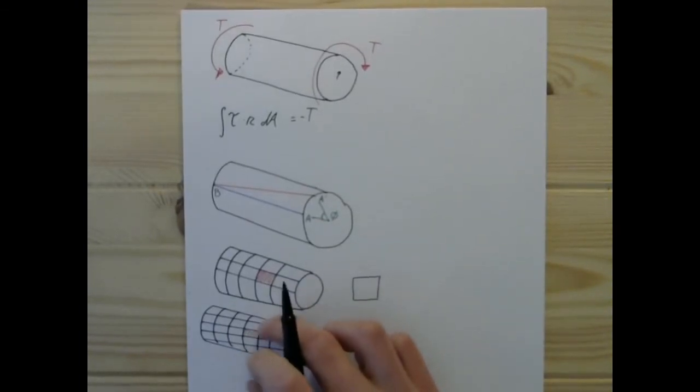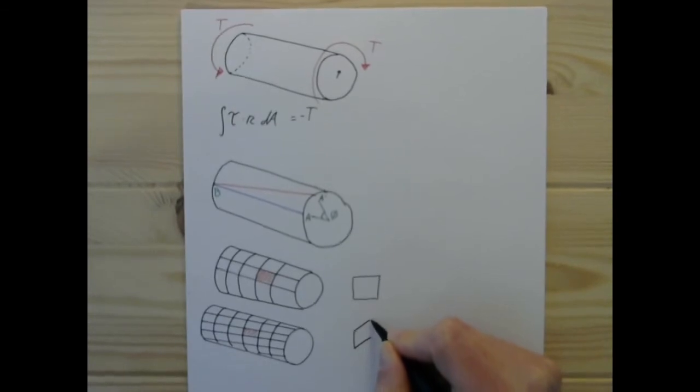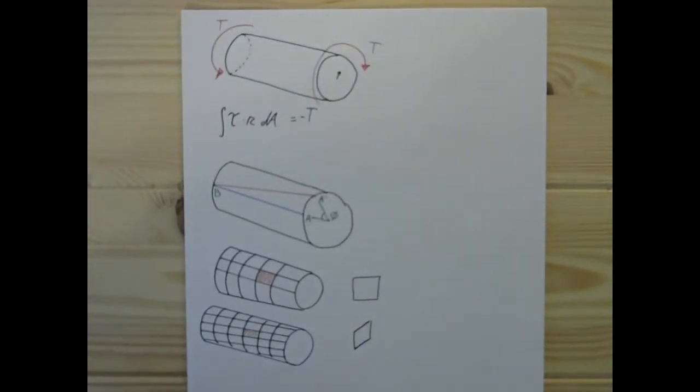...whereas over here, because this ring has been rotated, we've got a rhombus shape, right here, for our elemental shapes.